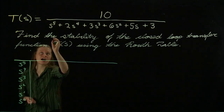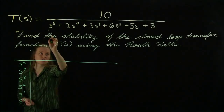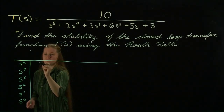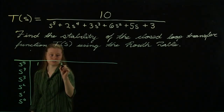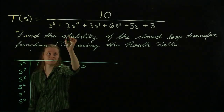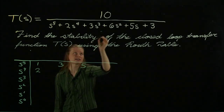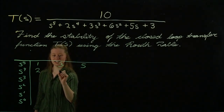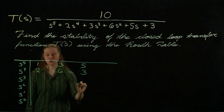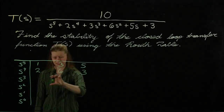Let's start. For the first row, we alternate every other coefficient: one, three, five. Then for the second row, we start with the second coefficient and alternate again: two, six, and three. The rest of the coefficients in the table are calculated based off of these first two rows and succeeding rows.